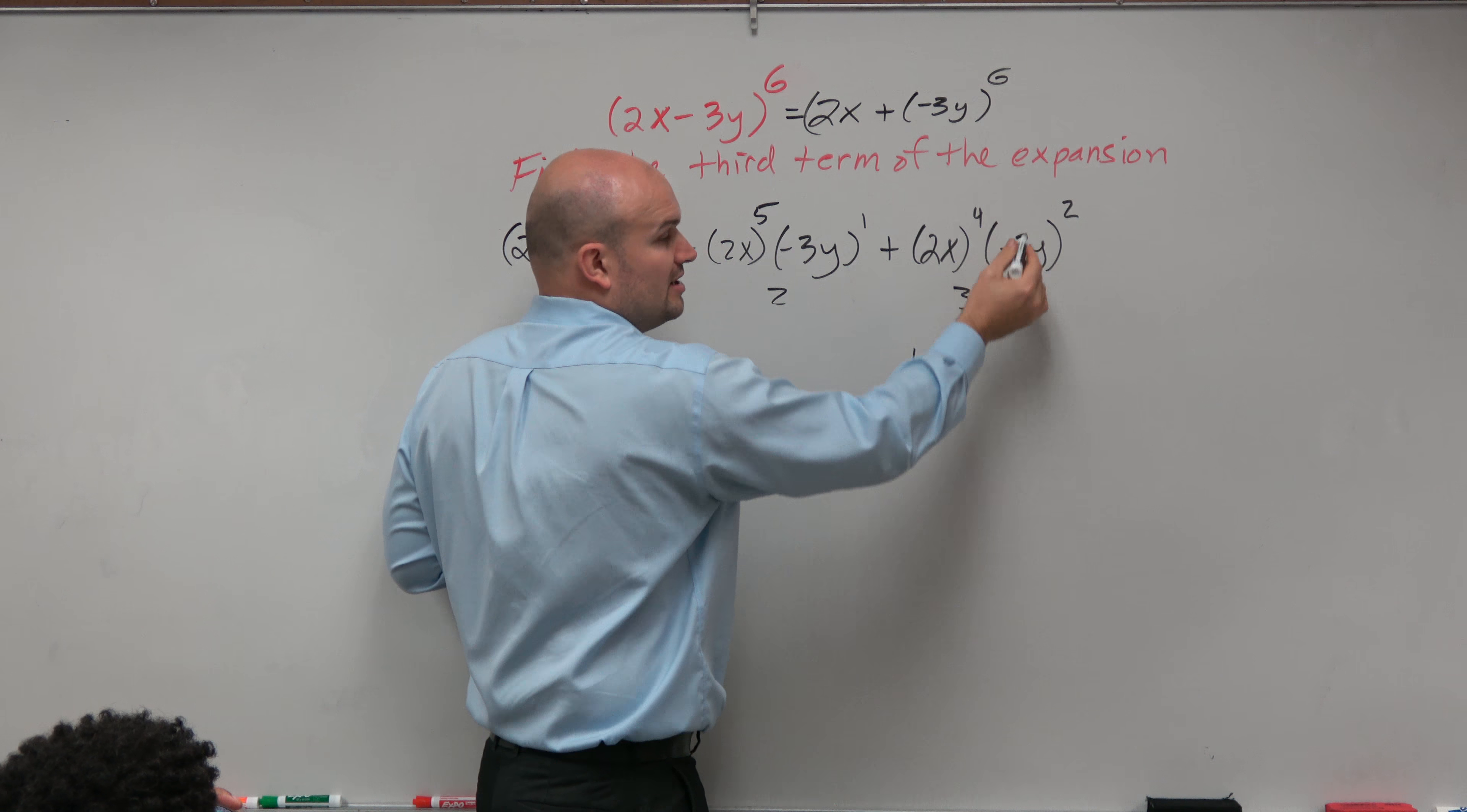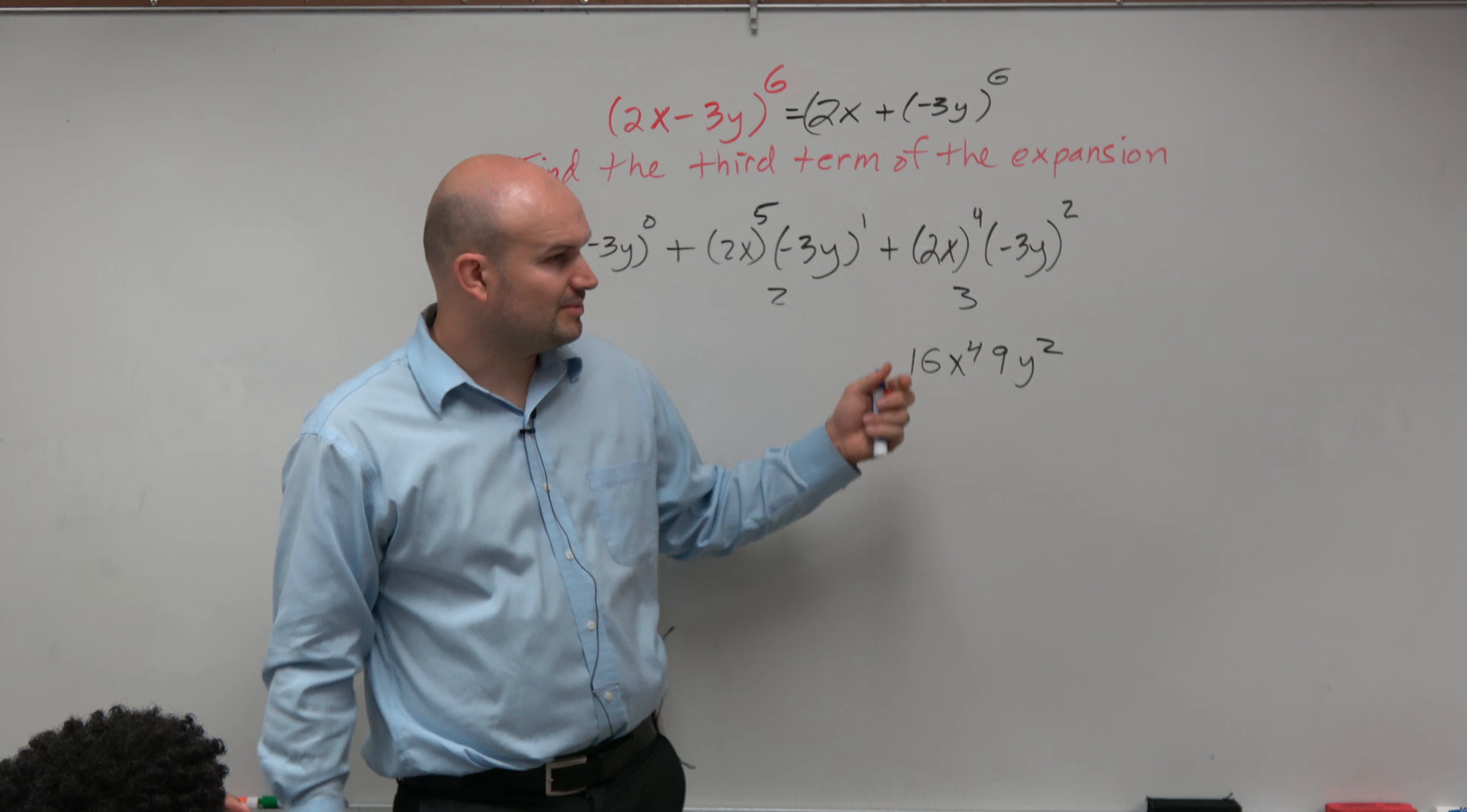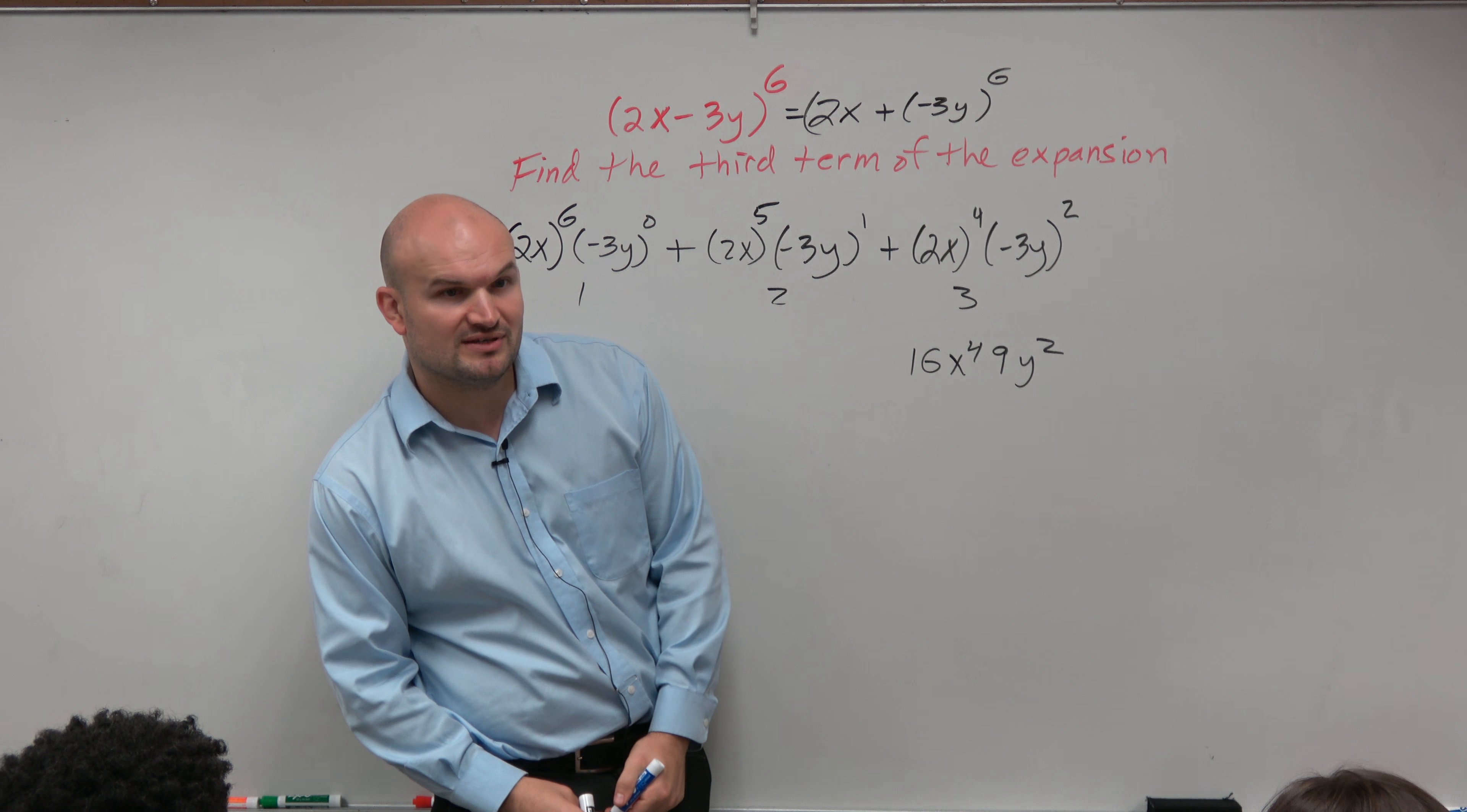Negative 3y squared is going to be positive 9y squared. And then I can just multiply 16 times 9. So 16 times 10 is 90. 6 times 9 is going to be 54.